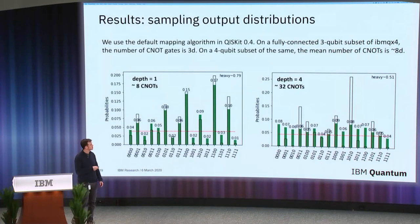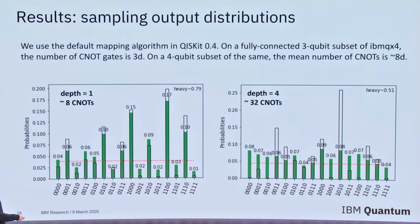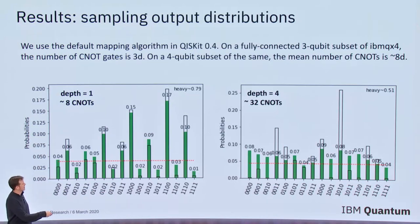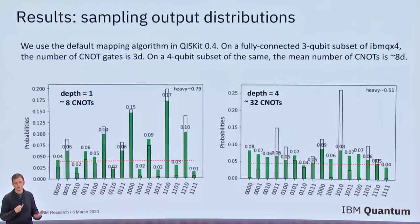What does that look like in the experiment? For four qubits after one depth of the volume algorithm, you can see that the white bars — the ideal distribution — and the green bars are very heavily overlapped, and the experiment had a heavy output fraction of 0.8. But then by depth four, these systems really depolarize: the experimental distribution is basically flat, and the heavy output is only 0.5. This shows how the errors have destroyed your ability to perform that unitary.